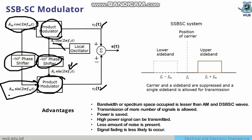To clarify: SSB SC means single sideband suppressed carrier, and DSB SC means double sideband suppressed carrier — in both cases the carrier is not transmitted. The advantages of SSBSC include: bandwidth or spectrum space occupied is less than AM and DSBSC; transmission of more signals is allowed; power is saved; higher power signals can be transmitted; less noise is present; and signal fading is less likely to occur.